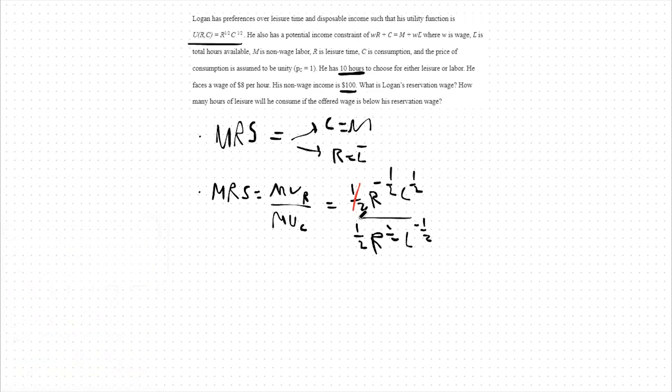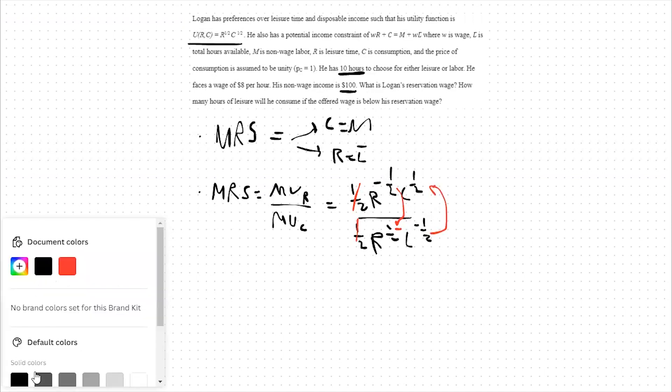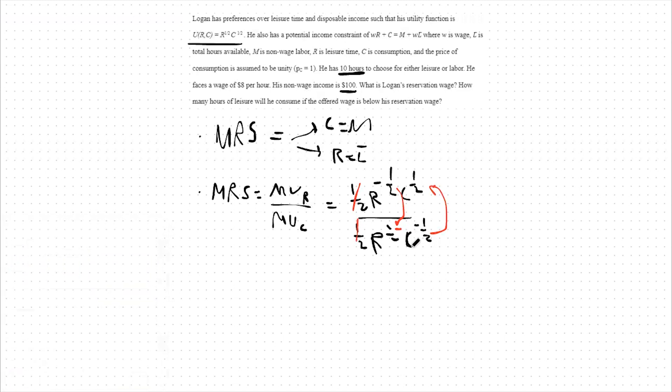To simplify this a bit, we can cancel out these one halves, we can move R down, and we can move C up. What we're left with, then, is C over R for our marginal rate of substitution.